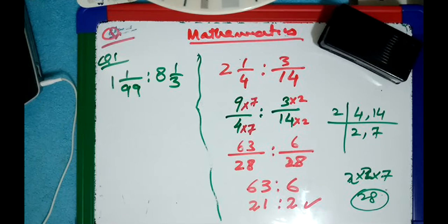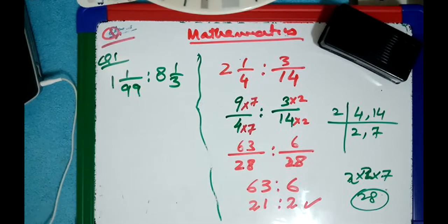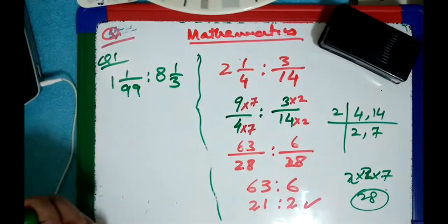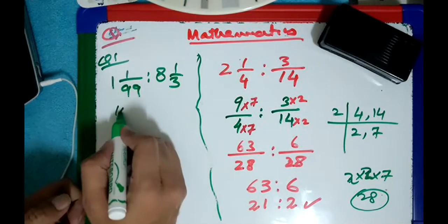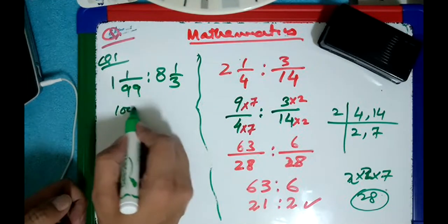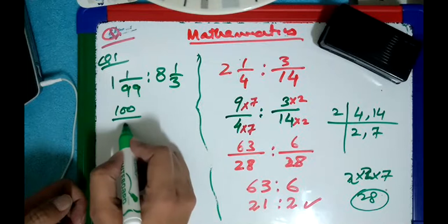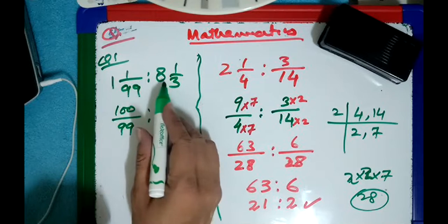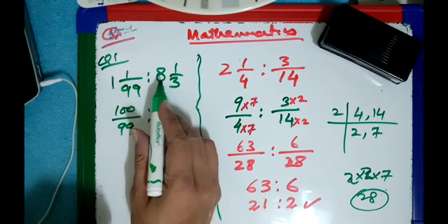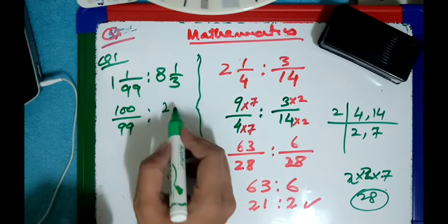I didn't understand how to find the LCM. Okay, that's the problem. So: 99 and 100, meaning 100 over 99. You got it. And 8 whole 1 over 3 is: 8 × 3 = 24, plus 1, so 25 over 3.